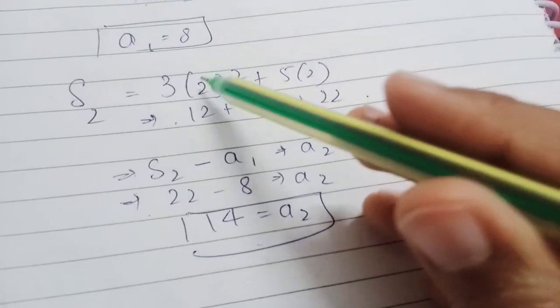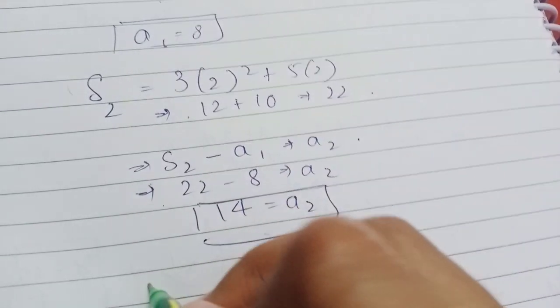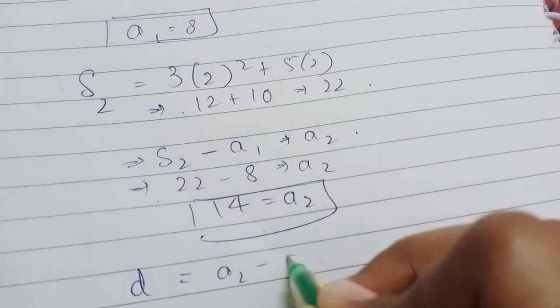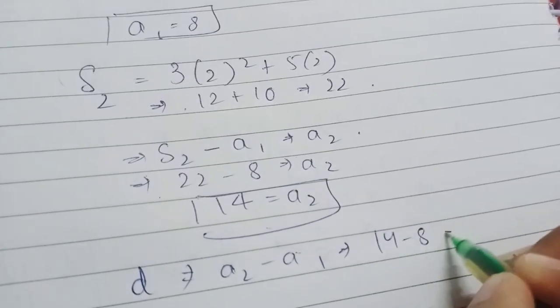So, we have the first term and the second term, so we can find the common difference. Common difference will be a₂ minus a₁, which will be 14 minus 8, which will be 6.